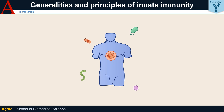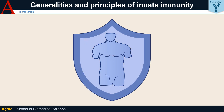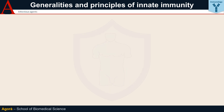Much of the credit for this defence goes to the immune system, a complex network that largely depends on leukocytes or white blood cells — cells that are produced in the bone marrow and that reach the whole body through the bloodstream.